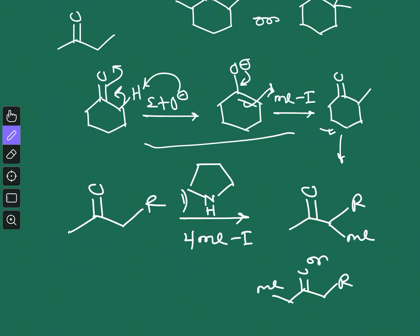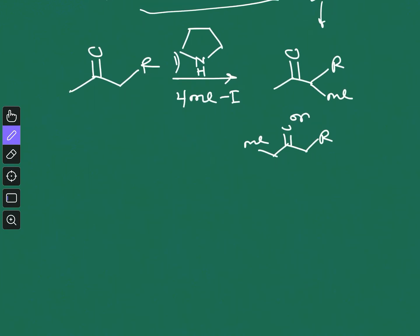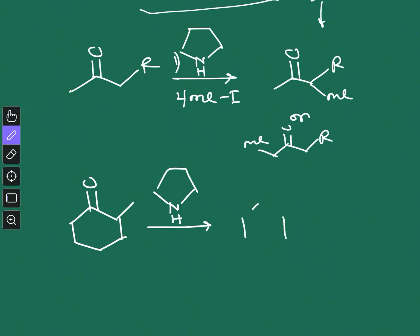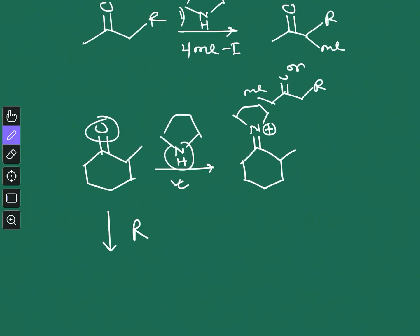This step is actually enamine formation. In the first step, when you treat this ketone with a secondary amine, a condensation reaction will occur and you will get an iminium ion — a condensation between the carbonyl group and the NH group. You need a secondary amine; if you use a primary amine, a stable imine will form instead. We don't want that stable imine; rather we want this unstable iminium where we have this positive charge.